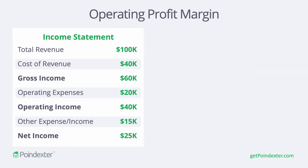Operating profit margin is our operating income expressed as a percentage of sales. We'd want to express it as a percentage of sales for a couple of reasons.